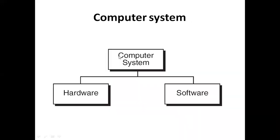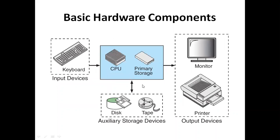In the fifth generation, computers are being developed based on artificial intelligence and data science. This diagram represents a computer system — a combination of hardware and software. Every computer system contains a keyboard, CPU, primary storage, auxiliary/secondary storage devices, and output devices such as a monitor and printer.